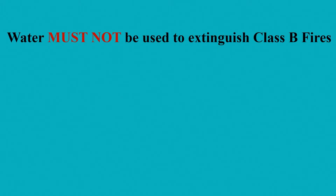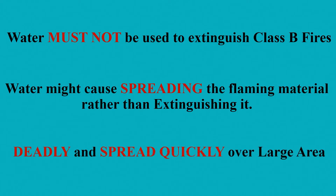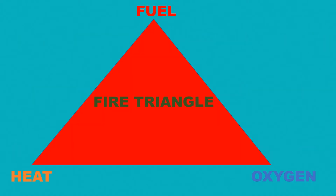Water cannot be used to extinguish Class B fires, as the water might cause the flaming material to spread rather than extinguish it. These types of fire can be deadly and can spread quickly over large areas in a short time.